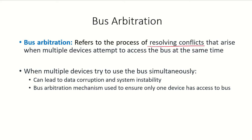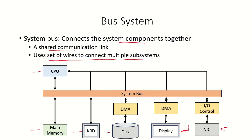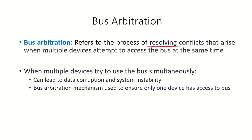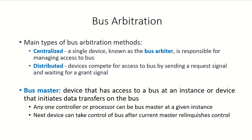Bus arbitration refers to the process of resolving conflicts that arise when multiple devices attempt to access the bus at the same time. For example, if the main memory and the secondary storage both want to use the system bus, bus arbitration decides which unit or subsystem will be given the bus first. When multiple devices try to use the bus simultaneously, this can lead to data corruption and instability in the system, so bus arbitration ensures only one device has access at a time.